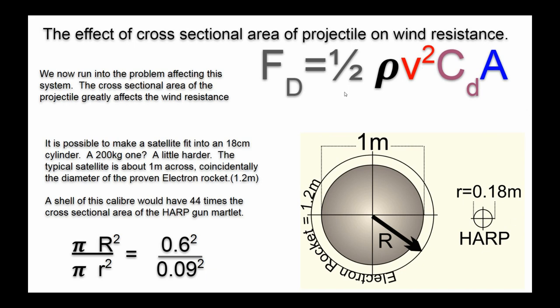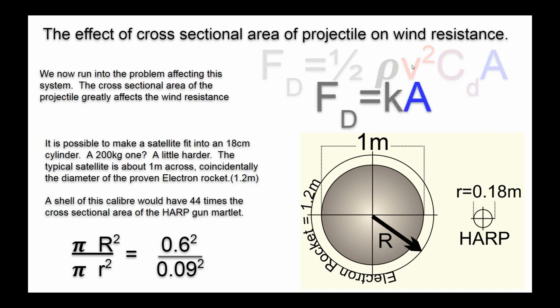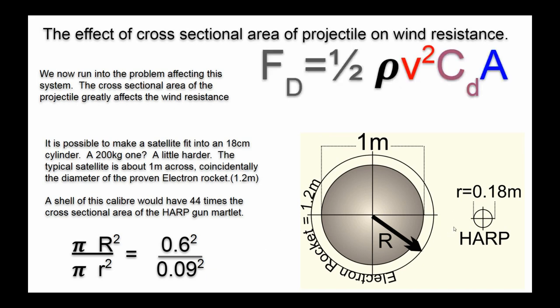So this is where we run into a problem. All these things are fixed in here, the half, the rho, the V squared, the CD, that's not going to change. So that's all basically a constant that's taken care of by the calculations. It's really this area that we have to play with. And here's the problem. If you want to increase the diameter of the shell from about 20 centimeters to a meter, that's five times the diameter. That translates into 44 times the surface area of the original harp shell. This means they could be dealing with 44 times more drag if they try to construct the caliber necessary to directly compete with the electron rocket. And that's why I'm not so certain they are going to be able to make large shells. And that's what we're going to look at.